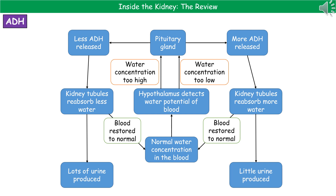Starting at the centre, the hypothalamus — part of the brain — detects the water potential of the blood. If we go up the left-hand side: if the water concentration is too high, it sends a message to the pituitary gland to release less ADH. That means the kidney tubules will reabsorb less water, so the blood water potential is restored to normal, and we produce lots of urine because not as much water is reabsorbed.